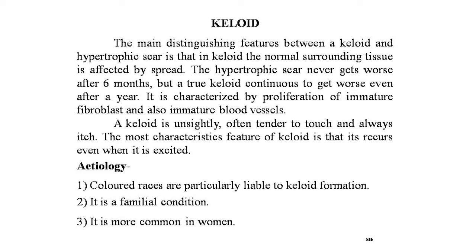The next entity is the keloid. The main distinguishing feature between a keloid and a hypertrophic scar is that in keloid, the normal surrounding tissue is affected by spread. A hypertrophic scar never gets worse after six months, but a true keloid continues to worsen even after years. Keloid is characterized by proliferation of immature fibroblasts and also immature blood vessels. It has claw-like processes, looks smooth, pink, and raised. A keloid is unsightly, often tender to touch, and always itches.